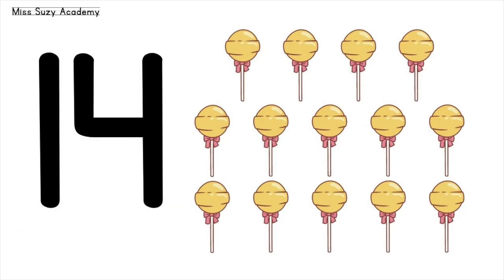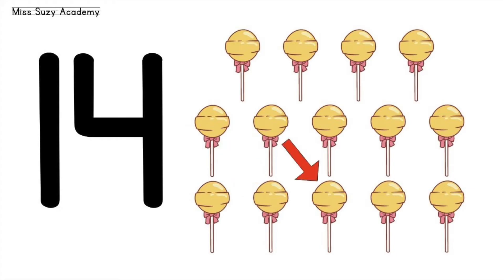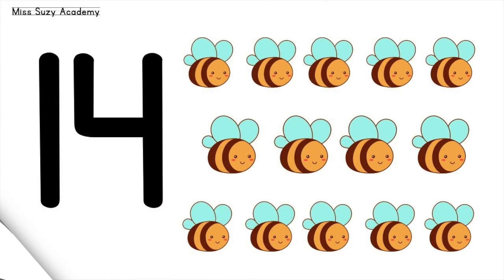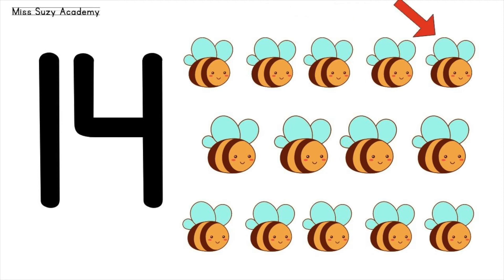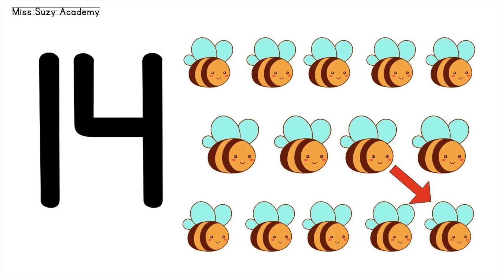14 lollipops. 14 lollipops. 1, 2, 3, 4, 5, 6, 7, 8, 9, 10, 11, 12, 13, 14. 14 bees.